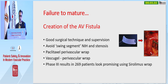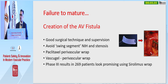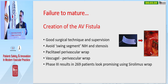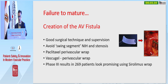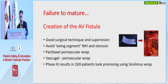When creating the fistula, good surgical technique and attention to the swing segment are important. What I do is, once the fistula has been formed, create a tunnel to avoid a sharp angle from the fistula, and divide any adventitial bands, because that will cause flow disturbance, eddy currents, and hyperplasia. There are also some promising results with the sirolimus wrap, which are going to be presented at a French meeting later this year.